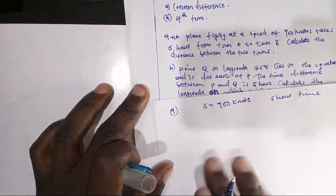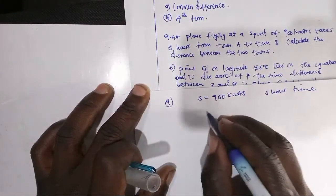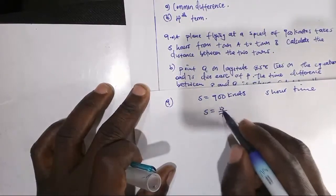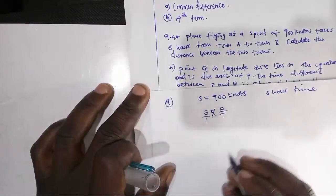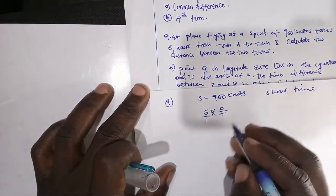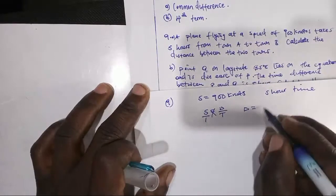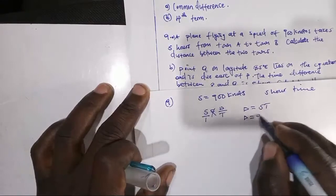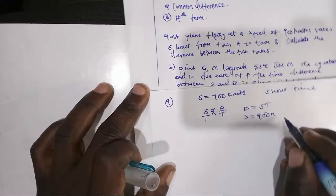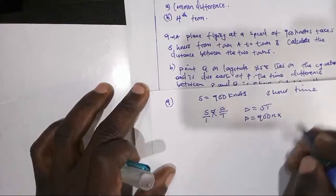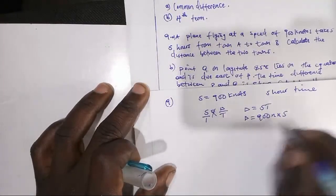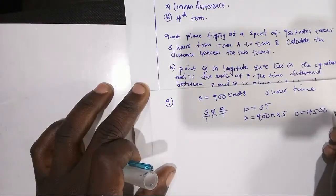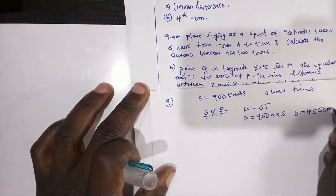So how do we calculate the distance? We write the formula: speed equals distance over time. We are looking for distance, so we make D the subject of the formula. Cross-multiplying gives D equals S times T. So D equals 900 knots multiplied by 5 hours, giving a distance of 4,500 nautical miles.